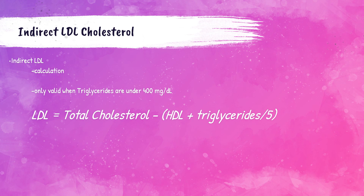To start off, I wanted to recap on LDL cholesterol. There are two different types of methods for evaluating a patient's LDL level. The first method is an indirect method, and this is done by a calculation. It's important to note that this calculation is only valid when the patient's triglycerides are under 400 milligrams per deciliter. When a patient gets a lipid panel done — a direct measure of total cholesterol, a direct measure of HDL, and a direct measure of triglycerides — we can indirectly calculate the patient's LDL level.